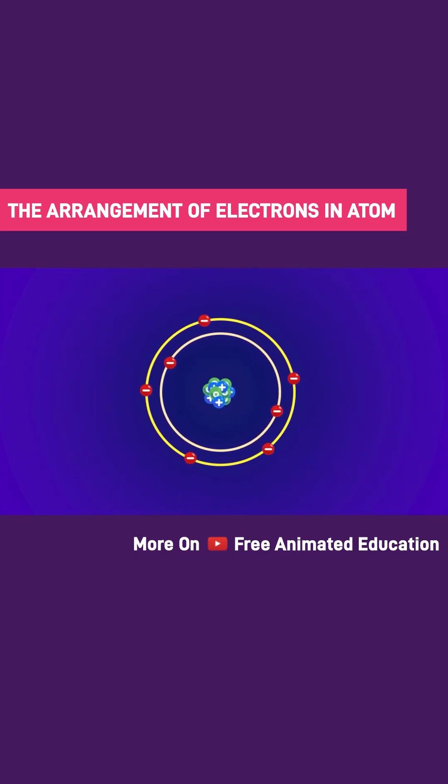Each electron shell has a specific energy level, and each electron shell can hold a certain number of electrons. All shells are filled in order of the energy level.